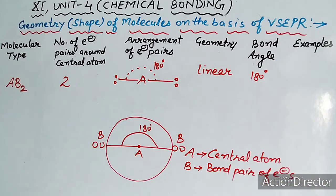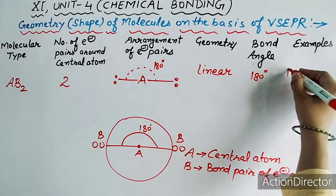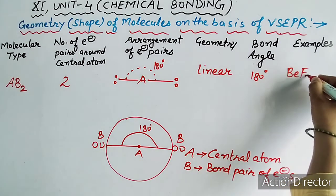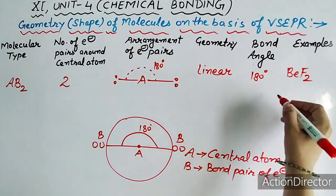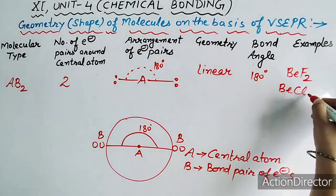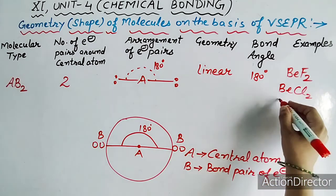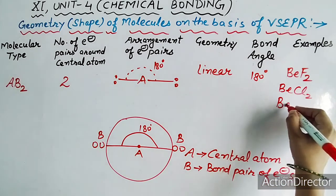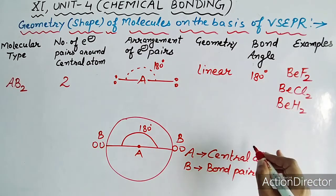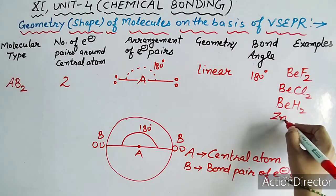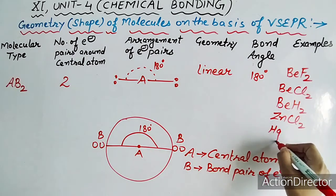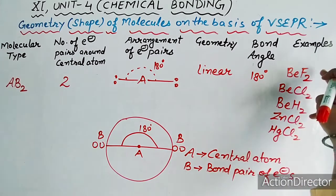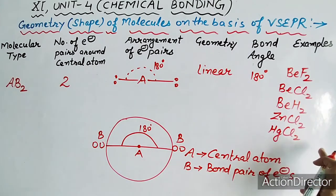Example में central atom एक है और surrounding में दो atoms हैं। Examples में BeF2, BeCl2, BeH2, ZnCl2, HgCl2 जैसे molecules आते हैं — ये सब AB2 type के molecules हैं।